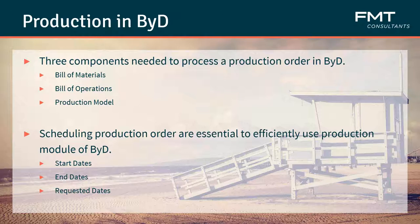So, production in By Design. There are three components that are needed to process your production order: one is your bill of materials, your second is your bill of operations, and your third is your production model. The other important essential of efficiently using a production model in By Design is your scheduling of the dates. You'll have your start dates, your end dates, and your requested dates — these are important dates that factor into your production order.